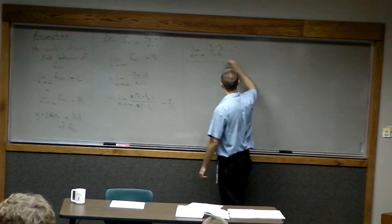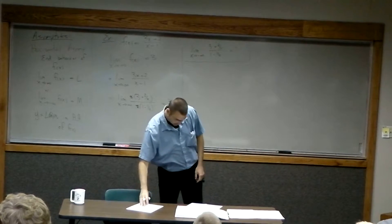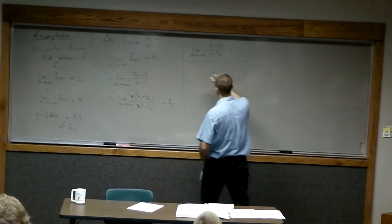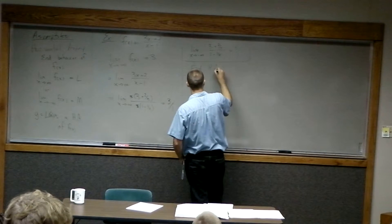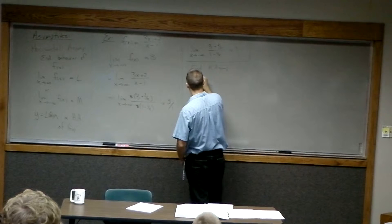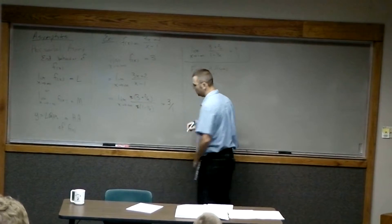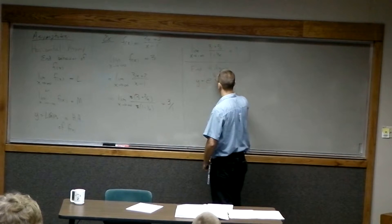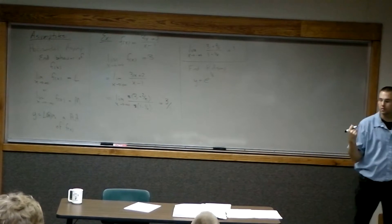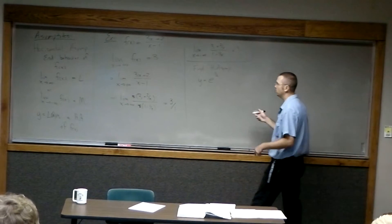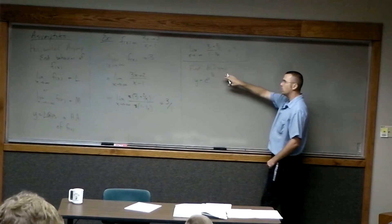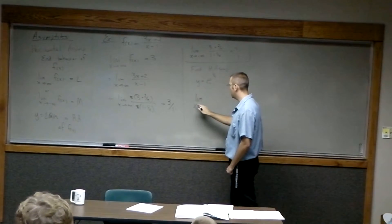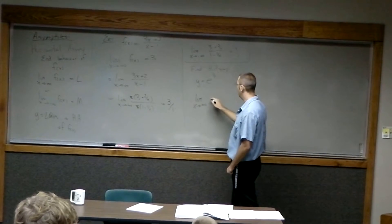Let's take a look at another example — it's going to be a little different. y equals e to the (1/t). I want to find where this function has horizontal asymptotes, which means looking at what happens out on the ends of this function. Let's look at the limit as t goes to positive infinity of e to the (1/t).